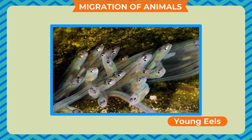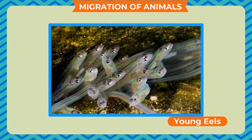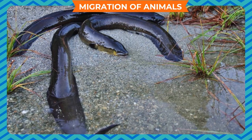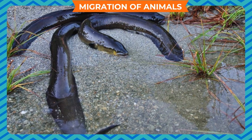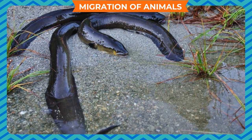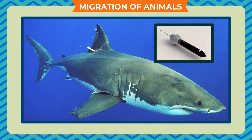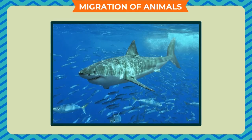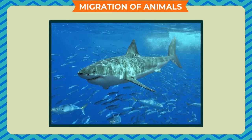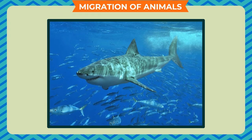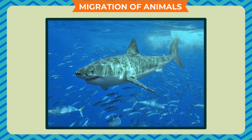The young eels come back to their parent's place, but by then their parents have died in the sea. Scientists use satellite tags to track the movement of migratory animals. They do so to understand how these creatures decide where to migrate.